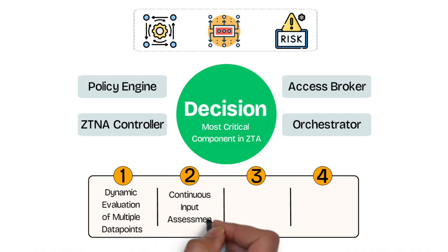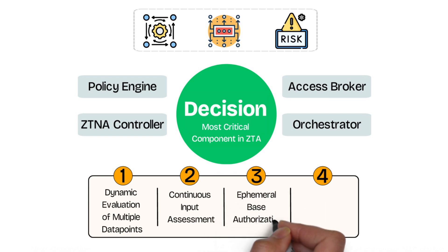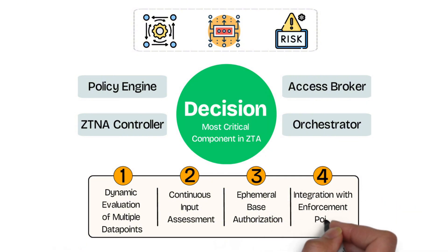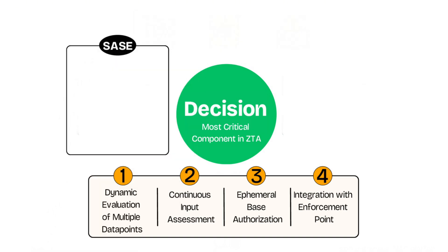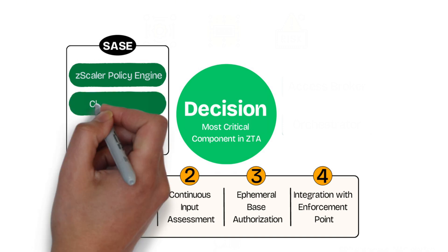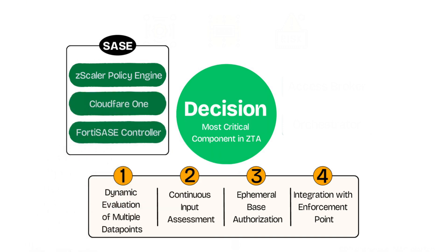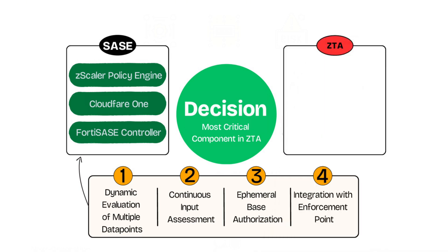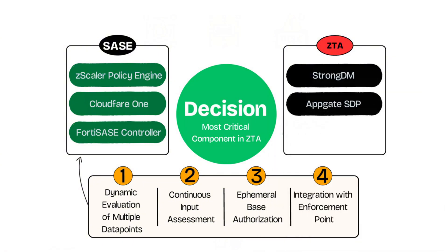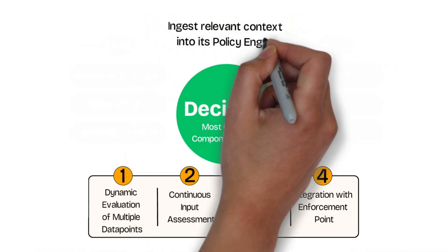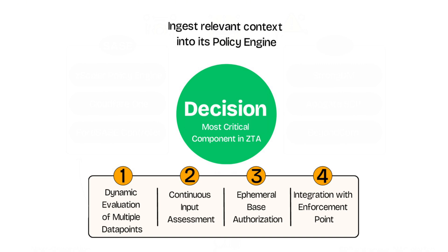The decision point must also include continuous input from internal and external sources, provide ephemeral session-based authorization which can be revoked at any time, and — possibly most important — integration with enforcement points. Some examples of a policy engine include modern SASE controllers such as Zscaler's ZPA policy engine, Cloudflare One, or FortiSASE's orchestrator. Since SASE is built on zero trust, many of these core requirements are baked into the design of these modern solutions. Decision points aren't just SASE-based — they could be purpose-built solutions such as StrongDM or Google's BeyondCorp. What matters most is whether the system can ingest relevant context into its policy engine and make dynamic decisions in real time.